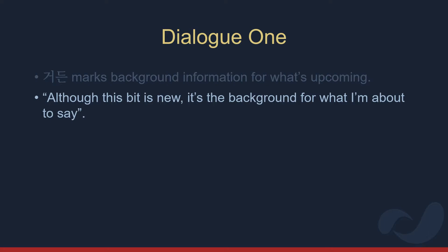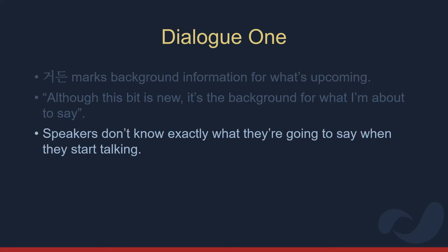This dialogue shows how 거든 is used to manage the flow of information in the conversation. Speakers don't know exactly what they're going to say when they start talking. Unlike writing a story, the speaker cannot easily plan ahead and have everything come out perfectly. Dialogue 1 shows how speakers can use 거든 to manage the flow of conversation by interjecting details necessary for the progression of the story.